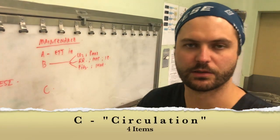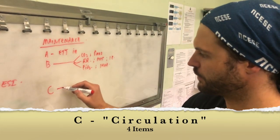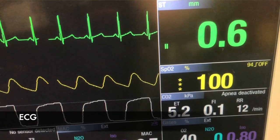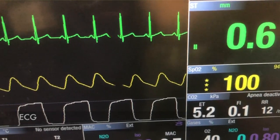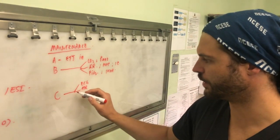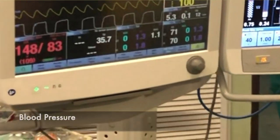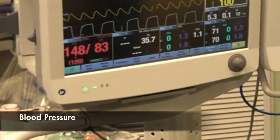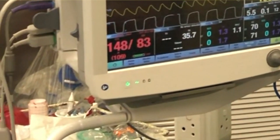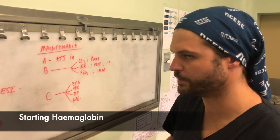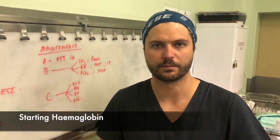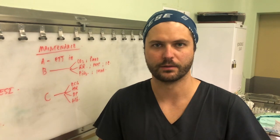C is for circulation. Under circulation I think about four things: ECG to check for arrhythmias; heart rate to assess for tachycardia or awareness; blood pressure and MAC targets; and the patient's starting hemoglobin, as a low HB with expected blood loss may mean we need to order blood early.